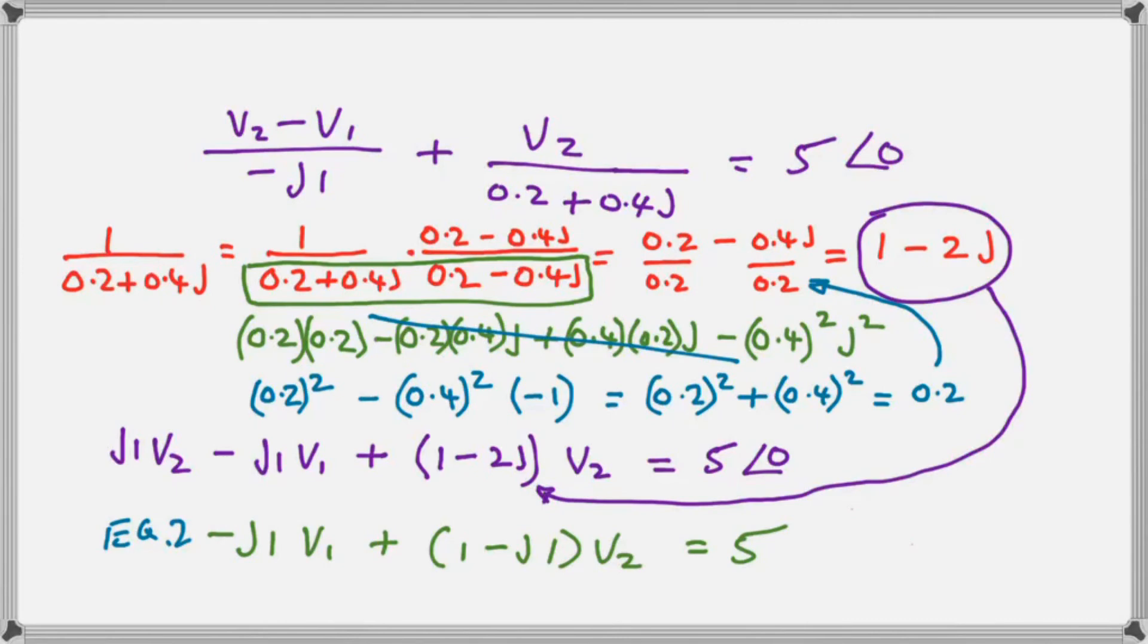Next thing we've done is to remove the denominator and multiply by the reciprocal as shown in the purple. And finally, we collect up terms just like we did and we have equation 2.